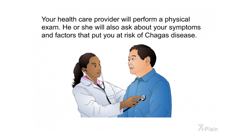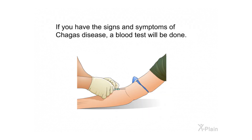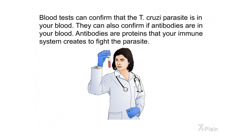Diagnosis: your health care provider will perform a physical exam and ask about your symptoms and factors that put you at risk of Chagas disease. If you have the signs and symptoms of Chagas disease, a blood test will be done. Blood tests can confirm that the T. cruzi parasite is in your blood. They can also confirm if antibodies are present — proteins that your immune system creates to fight the parasite.